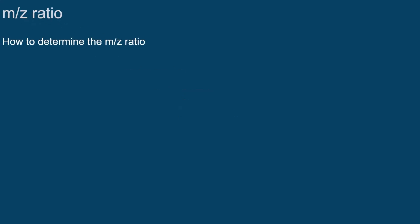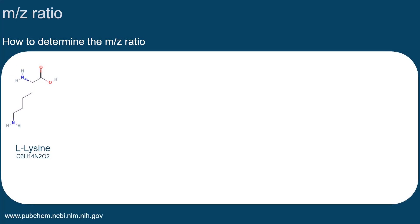How can we determine the M over Z ratio? First, we need to know the molecular mass of our molecule of interest. Let's keep it simple and only consider the nominal mass. That is, we don't take into account any decimal places for the atomic masses. In this example of lysine, the mass M is 146 Dalton.